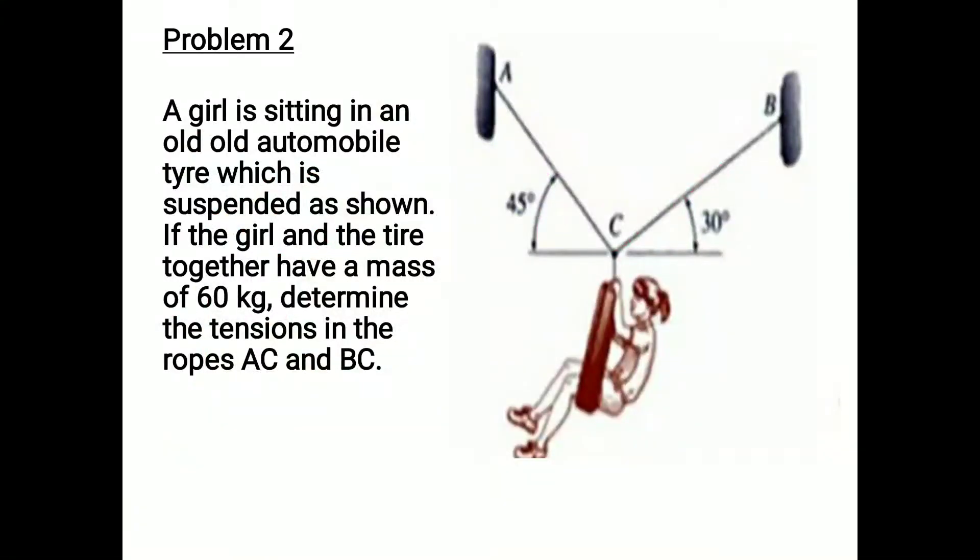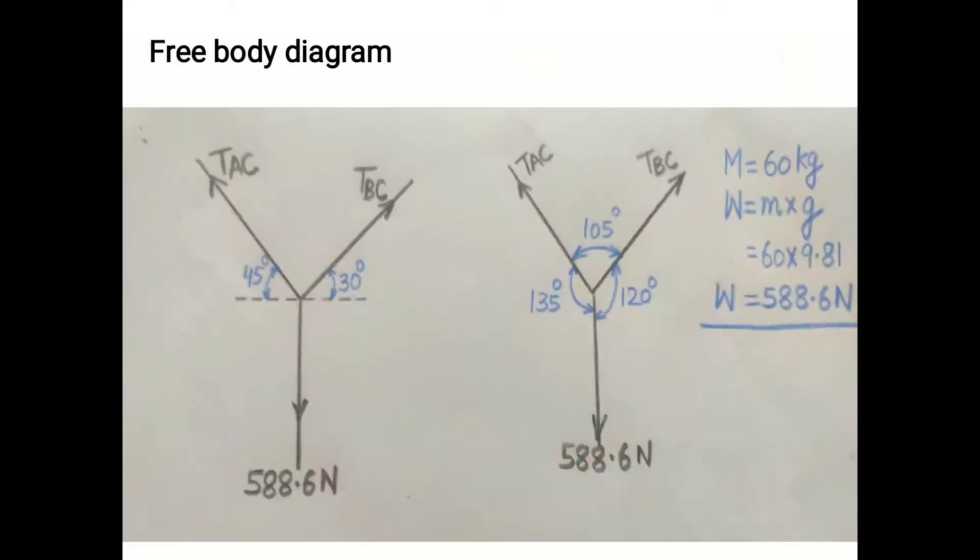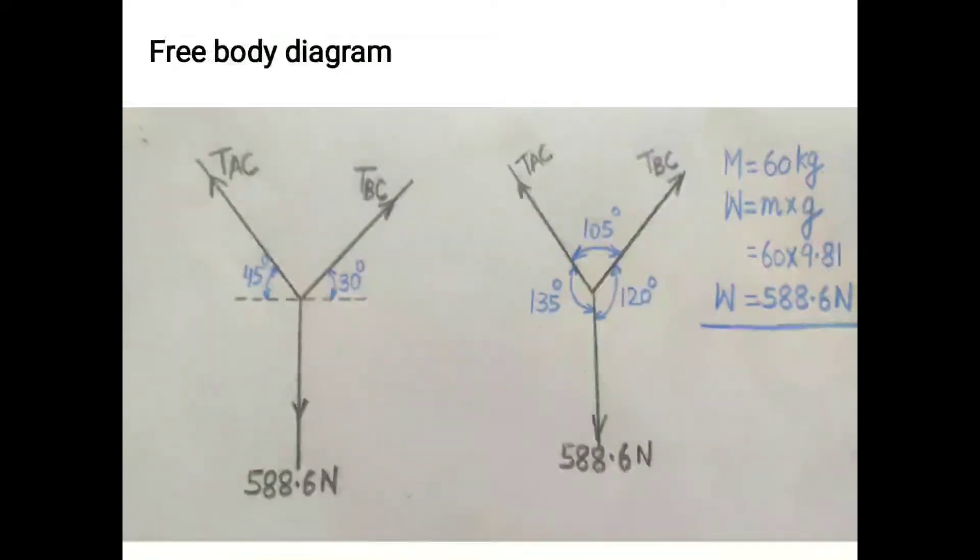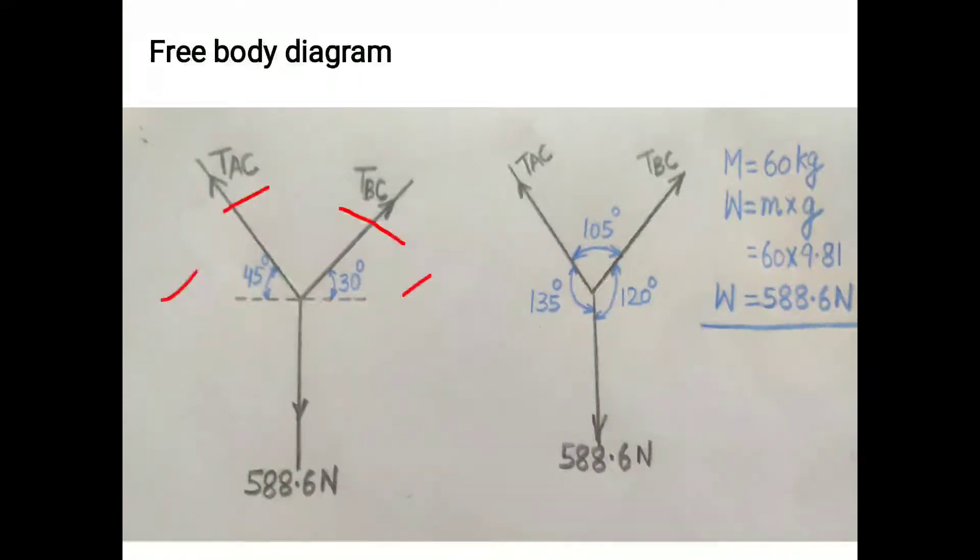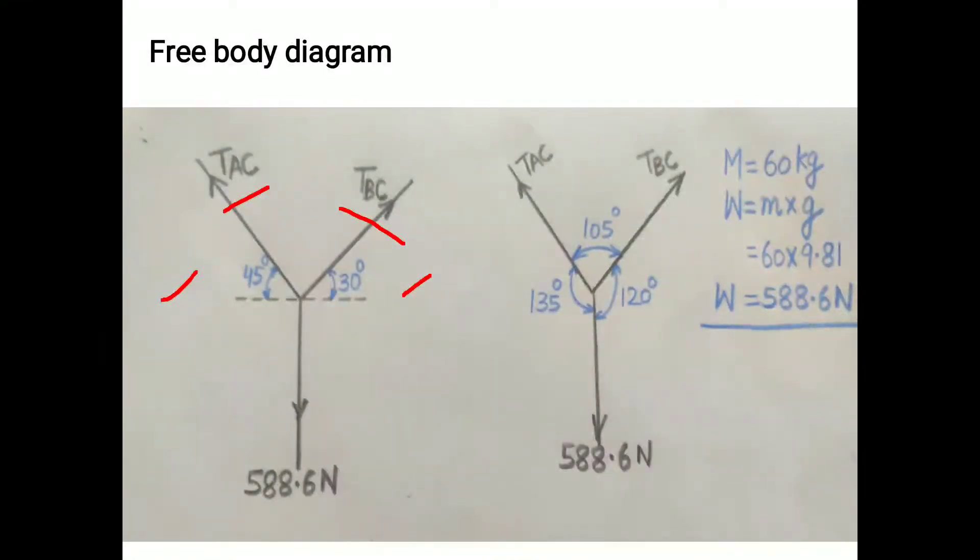Second problem: A girl is sitting on a tire. The total mass of the tire and girl together is 60 kg. Determine the tensions in the ropes AC and BC.